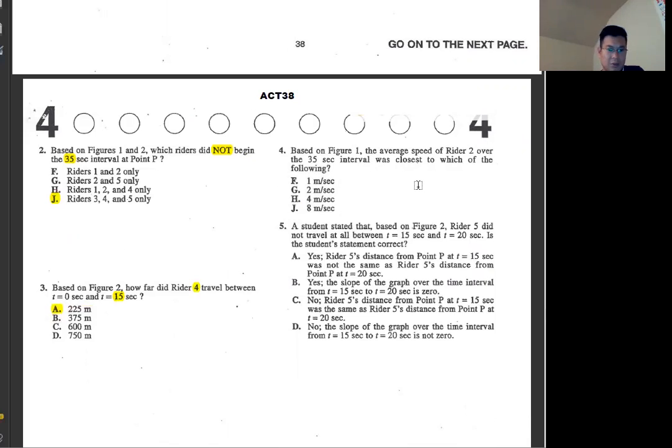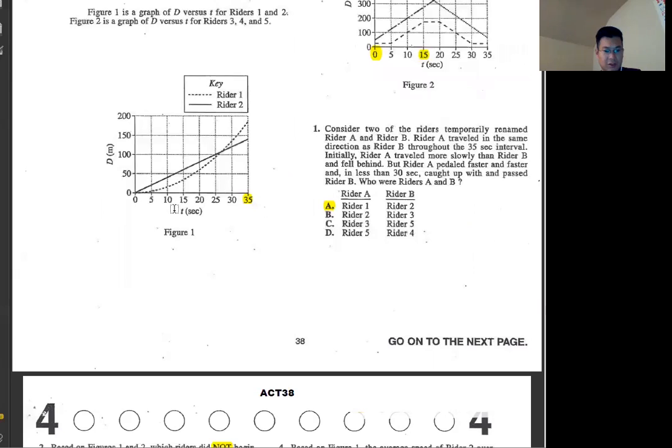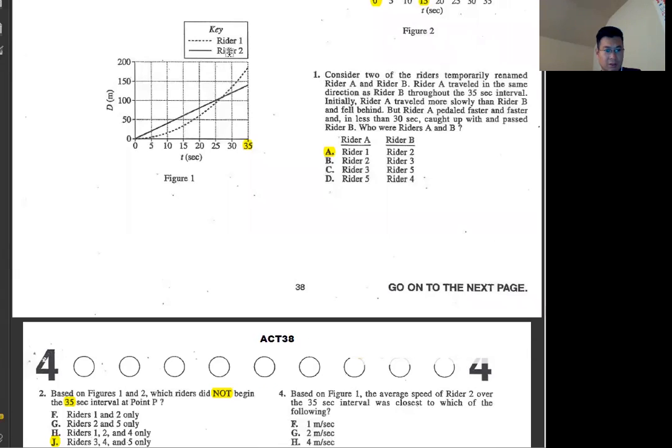Based on figure one, the average speed of writer two over the 35 second interval, which of the following. Average speed is distance divided by time. So distance for writer two, the solid line, is 140 divided by 35, which is 4.